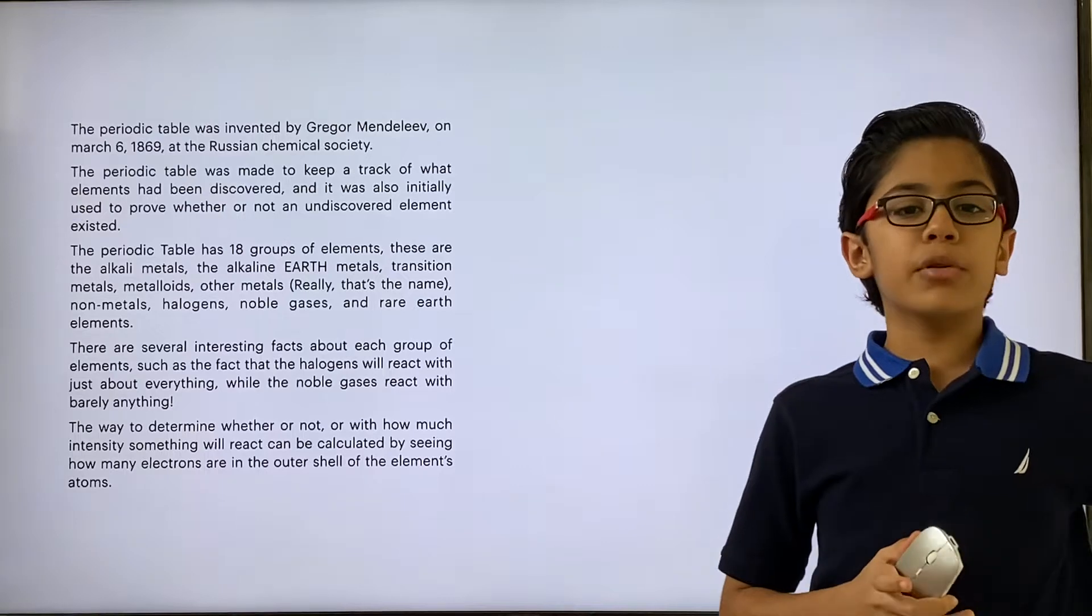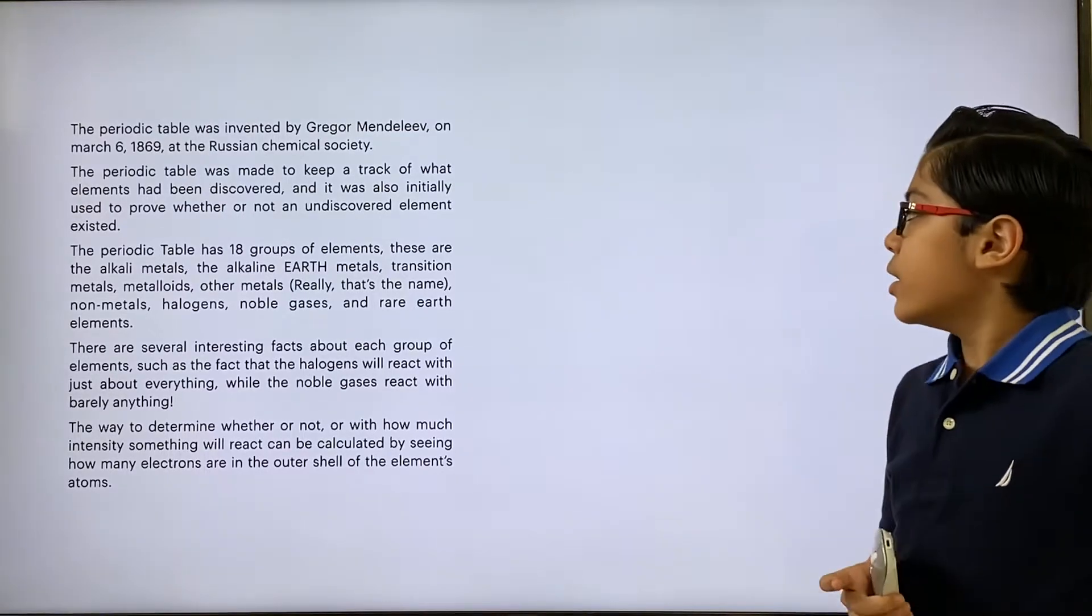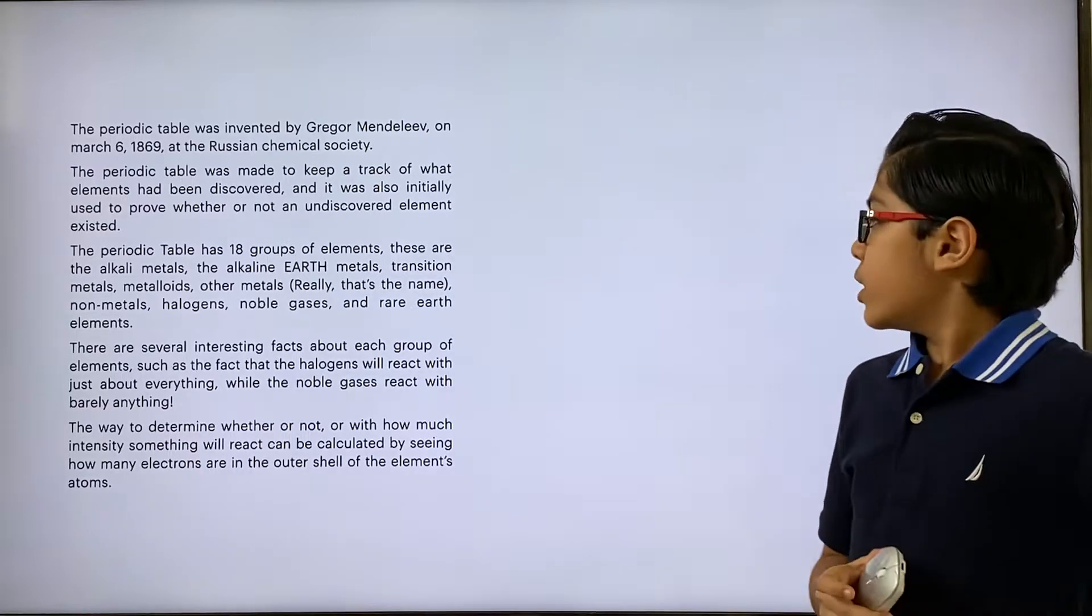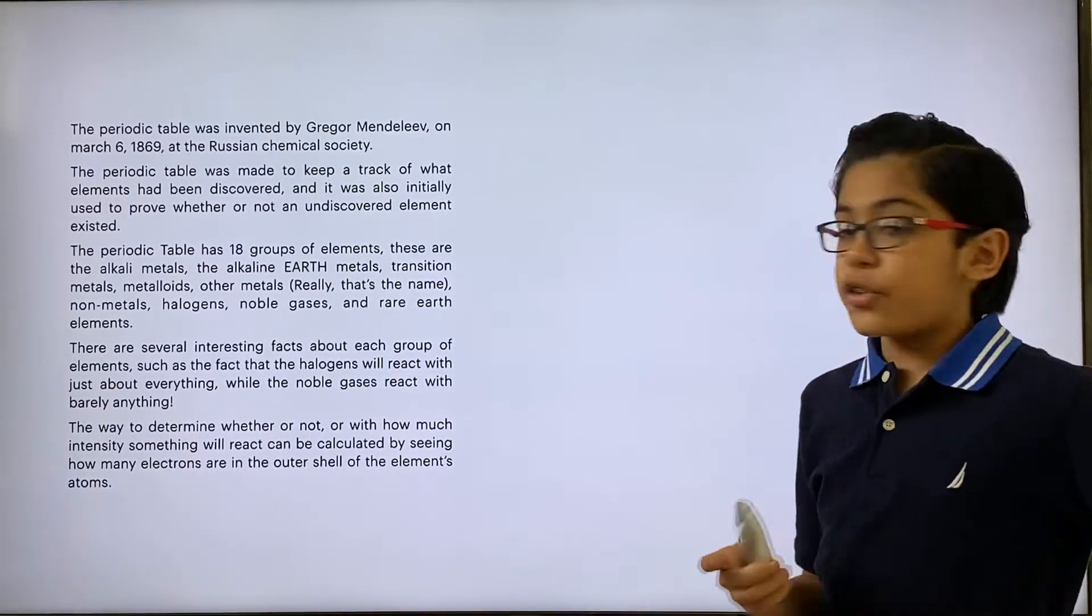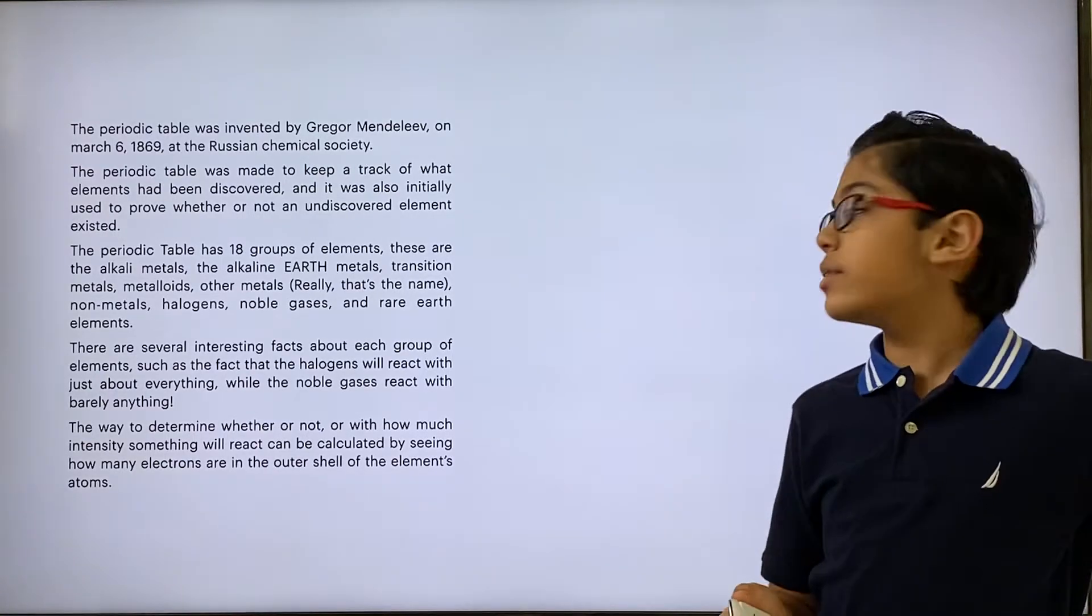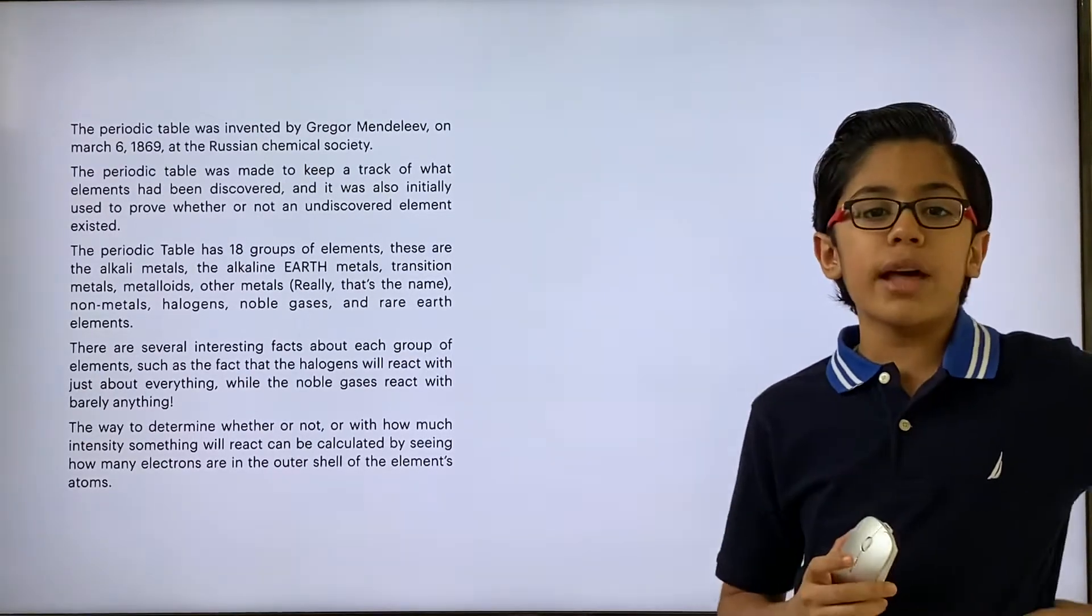The periodic table has 18 groups of elements. These include the alkaline metals, the alkaline earth metals, the transition metals, the metalloids, the other metals, that's actually their name, the non-metals, the halogens, the noble gases, and the rare earth element.